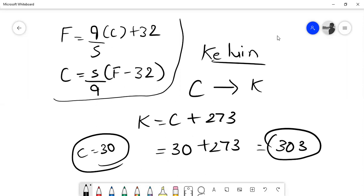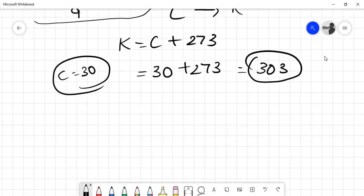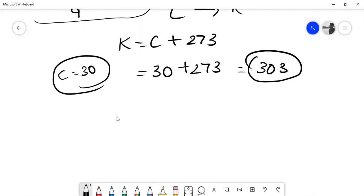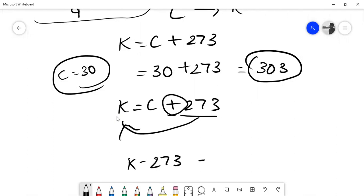Now at the same time, if it asks you how will you convert Kelvin to Celsius, if I move this 273 to the left side, what will happen? You have sign plus here, the sign will become minus, right? So what you will get is K minus 273 is equal to C.